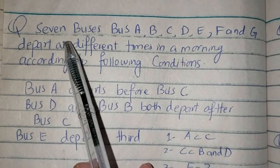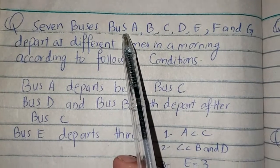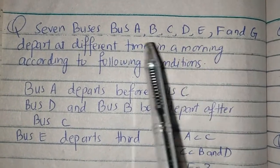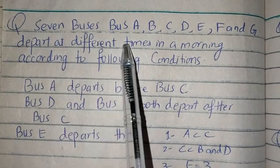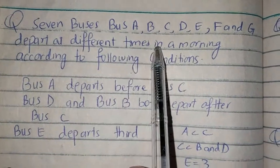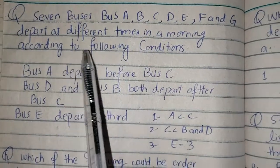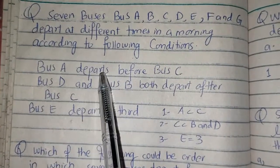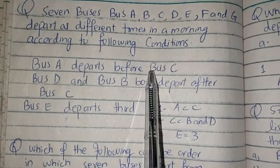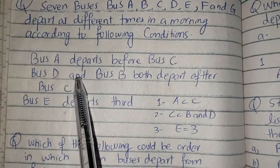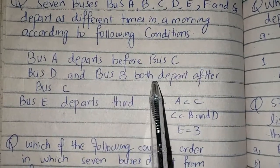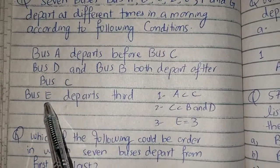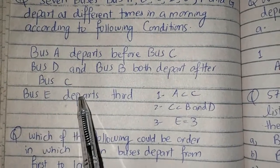Seven buses — bus A, B, C, D, E, F and G — depart at different times in a morning according to the following conditions. Bus A departs before bus C. Bus D and bus B both depart after bus C. Bus E departs third.